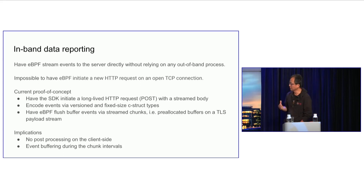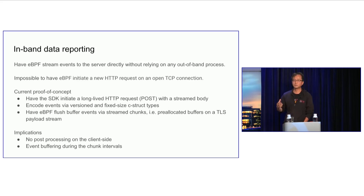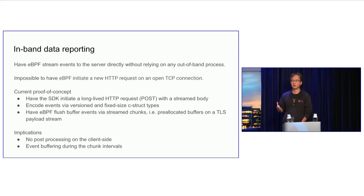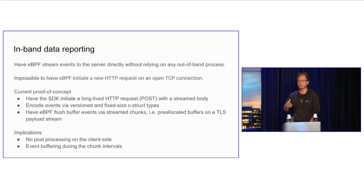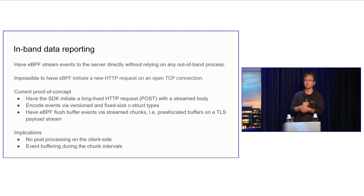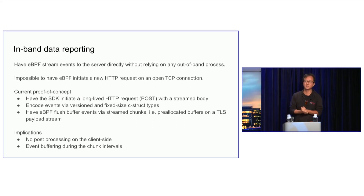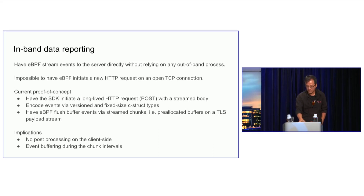The implications of doing this kind of data reporting are: there is no post-processing because we don't use Python or Go to post-process events here. Most of the events will just be raw events or simple metrics. Also, the events have to be buffered because the POST request with the pre-allocated buffer — we basically have to keep an interval; you can't just keep sending data to minimize overhead. So in between the chunks, the events have to be buffered. That's something we're looking into for the different use cases we're running into.